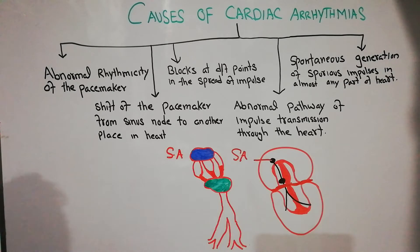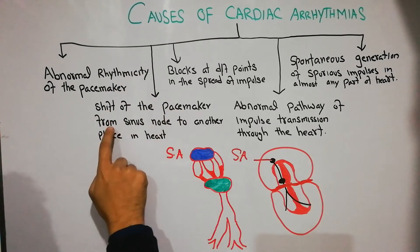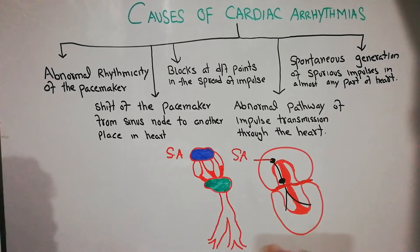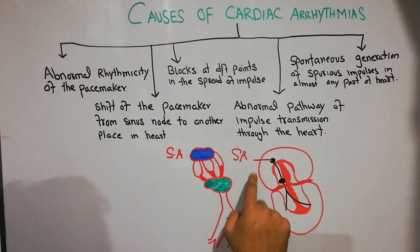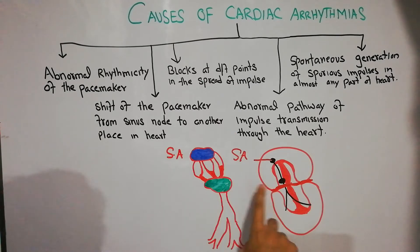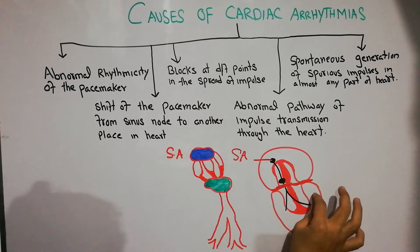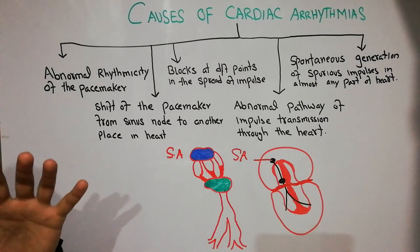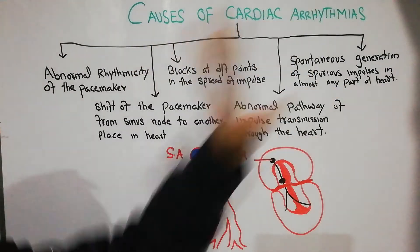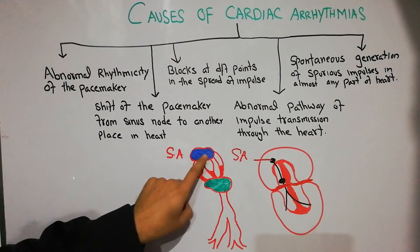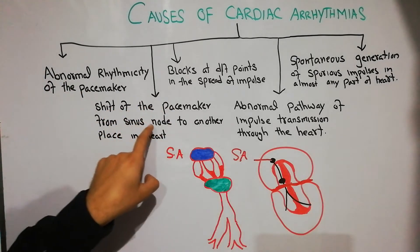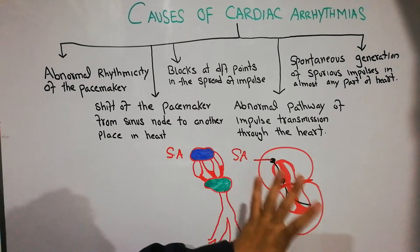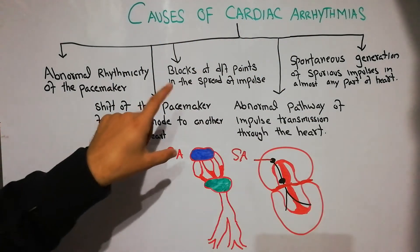The second cause is a shift of the pacemaker from the sinus node to another place in the heart. Normally, the SA node sets the tone and determines the rate and speed of the heartbeat. But if this pacemaker gets shifted to the AV node, the Purkinje fibers, or some other location in the heart muscle — due to infection, ischemia, or congenital abnormality — that could be another cause of cardiac arrhythmias.